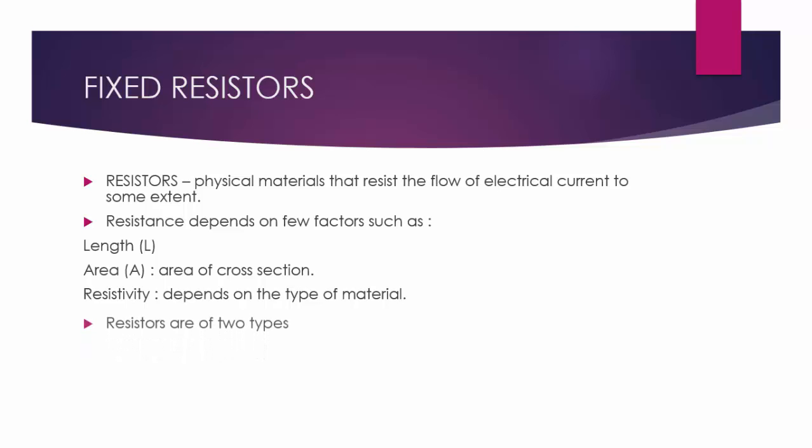Now coming to the types of resistors, they are mainly classified into two types: fixed resistors, where the value of resistance cannot be changed, and variable resistors, where the value of resistance can be varied.